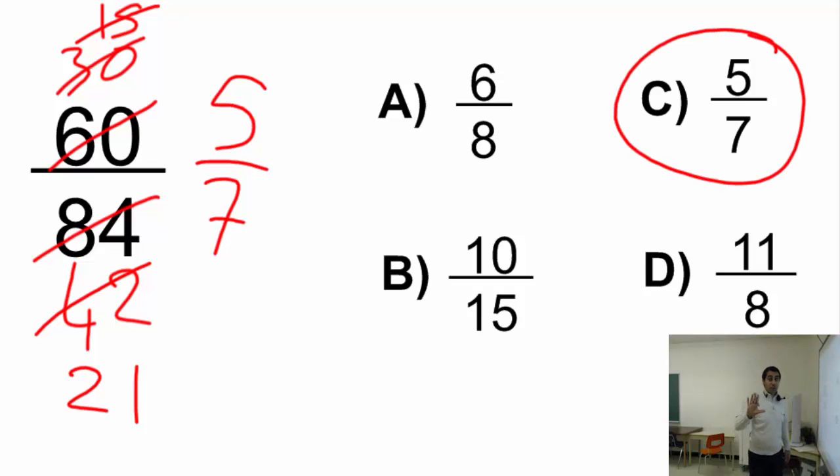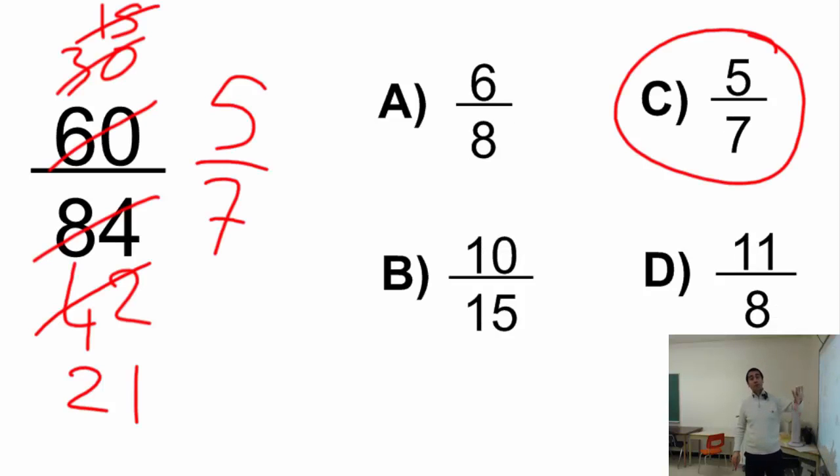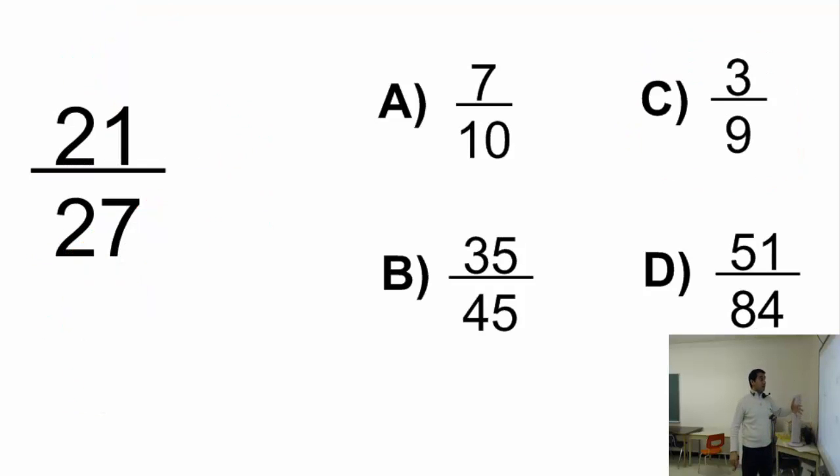Once again, please don't pause yet because I have another example here. Now let's talk about this one, because you don't have to have the lowest term always as an answer. Let's practice that. Let's put them in the lowest term. I can divide both of them by 3. Divide 21 by 3, that will give you 7. Divide 27 by 3, that will give you 9.